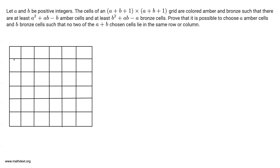I've drawn out a 6 by 6 grid of squares to our left just for us to be able to visualize things as we go, because we are going to do some manipulating with the squares on the grid. I haven't labeled them amber or bronze because that's not important at this stage. So let's look at our problem statement. We have positive integers A and B and we have this A+B+1 grid of cells, and each cell is colored amber or bronze such that there are at least this many amber cells and this many bronze cells.